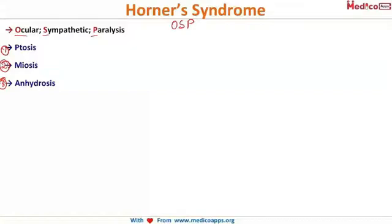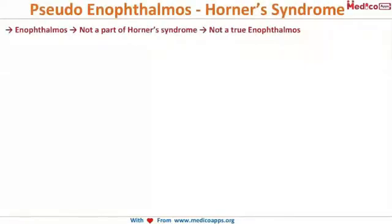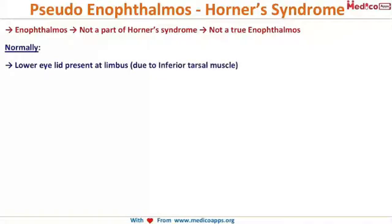The fourth feature of Horner's syndrome is anophthalmos — the opposite of exophthalmos, where the eye appears dragged inside the orbital cavity. However, this is not a true part of Horner's syndrome, because it is not a true anophthalmos.